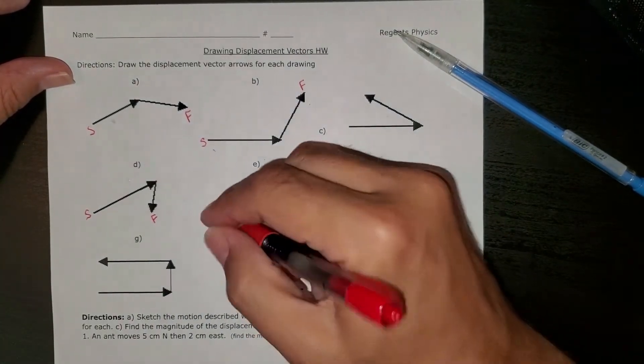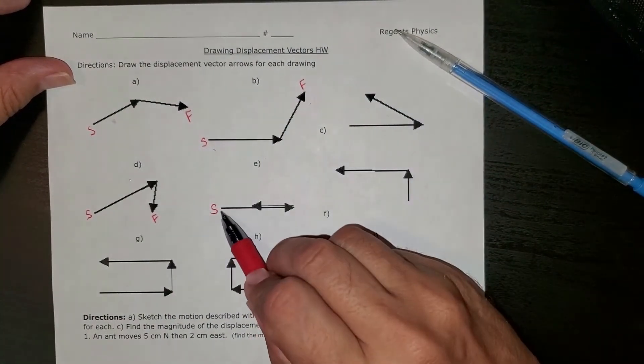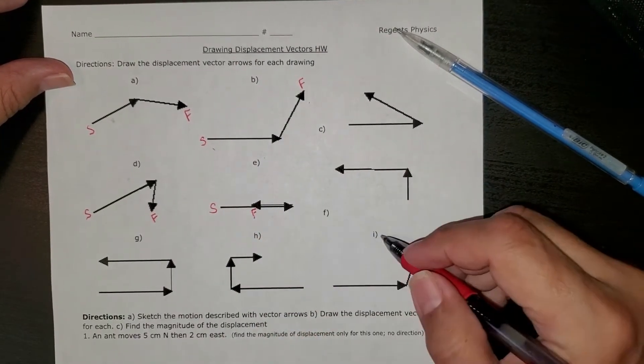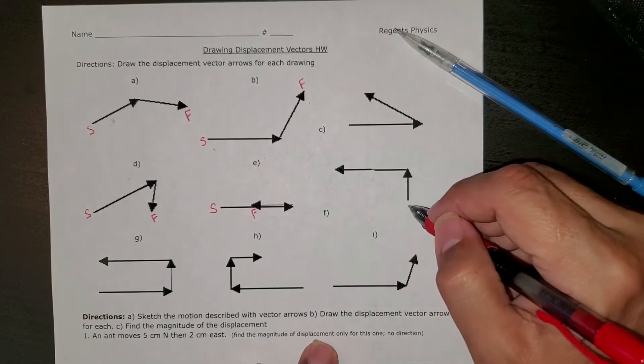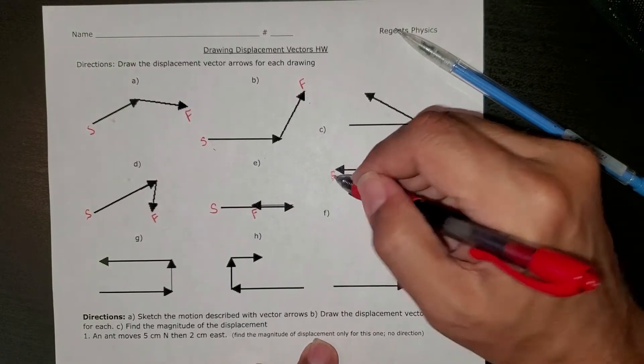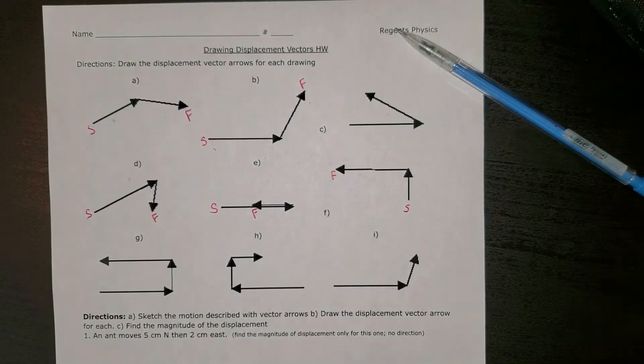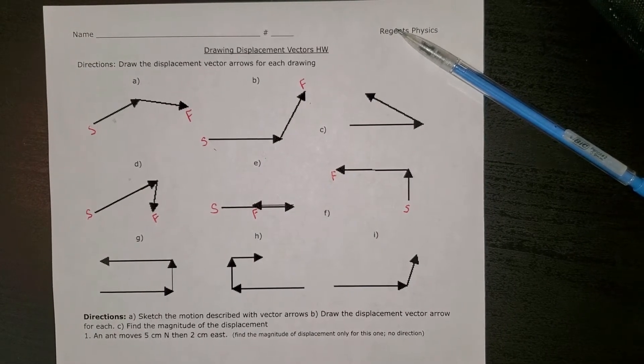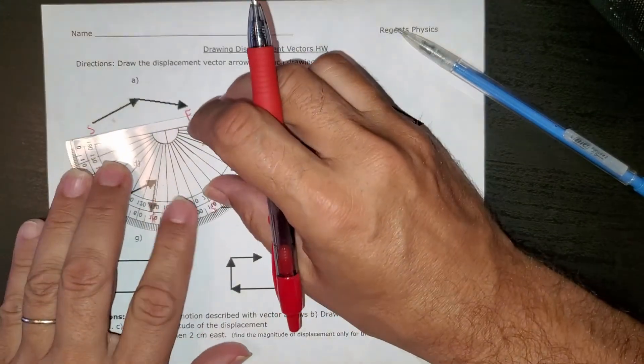This one's a little tricky. Here's the start, which is the tail of the arrow, and this is the head of the arrow to the finish. Right over here, this is the start and the finish. If you want to find displacement, you have to connect the start to the finish right here.